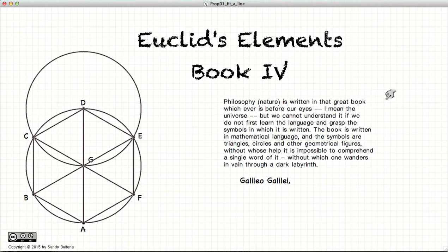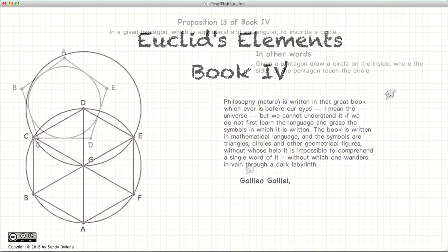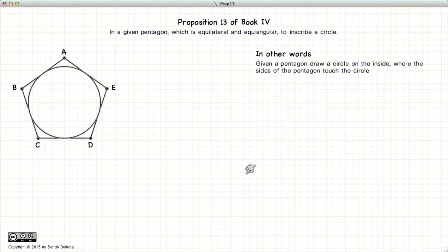Hi, and welcome to my tutorials on Euclid's Elements, Book 4. This video presentation is going to be on Proposition 13 of Book 4. And in this proposition, we are going to take a pentagon, equal angular and equilateral, and we are going to draw a circle inside of the pentagon, such that it touches each side of the pentagon.